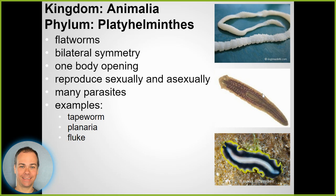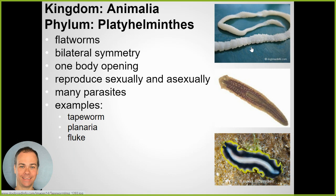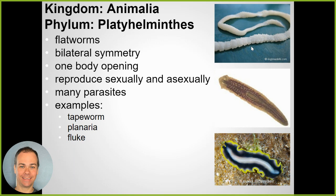Worms - there are a few different phyla. Platyhelminthes are flatworms. They have bilateral symmetry, can reproduce sexually or asexually, and only have one body opening - food goes in and waste comes out through that same opening. Many are parasites. A tapeworm lives in the digestive tract of different animals. Tapeworm sections can break off and come out in feces, and if another animal ingests it, it becomes infected - a form of asexual reproduction.